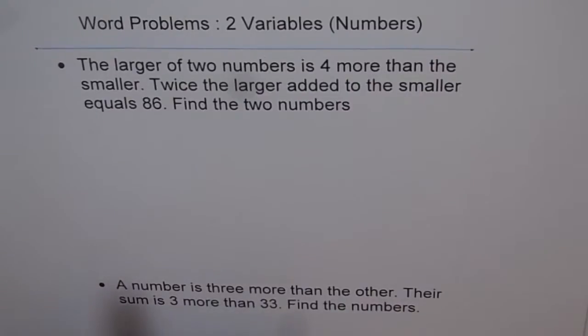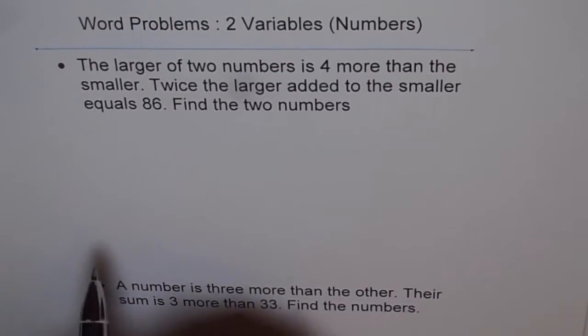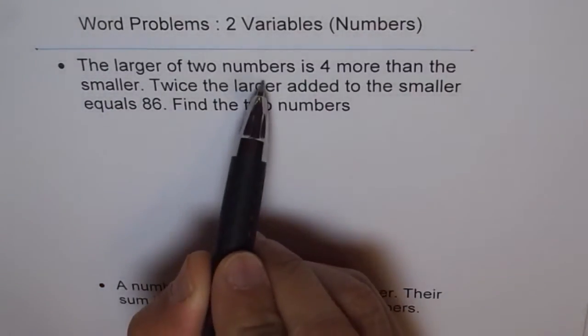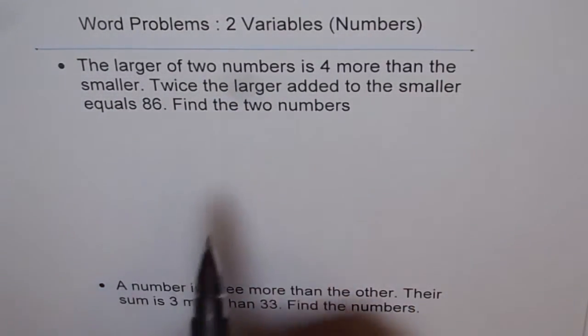Now let's define the variables and for that we need to read the problem once again. It says the larger of the two numbers, that means there are two numbers and one of them is larger.